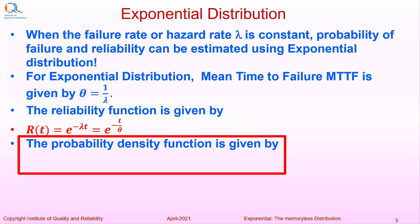The probability density function is given by f of t equal to lambda e to the power minus lambda t. You can also write it as 1 upon theta e to the power minus t upon theta.